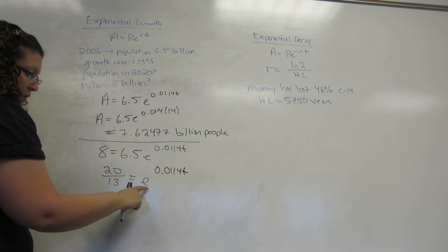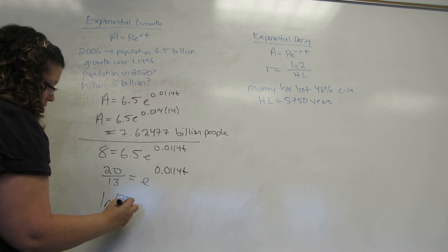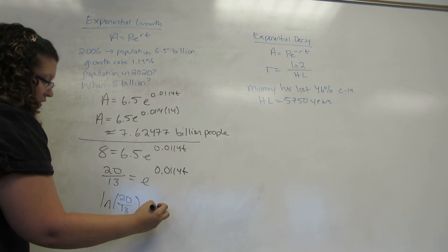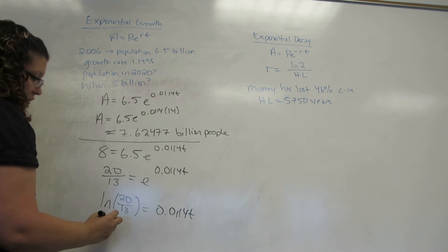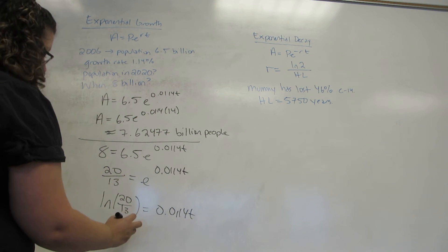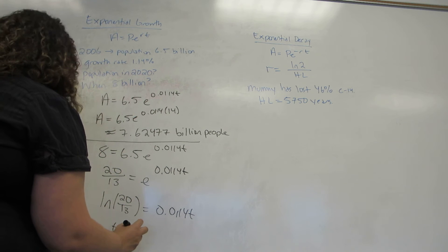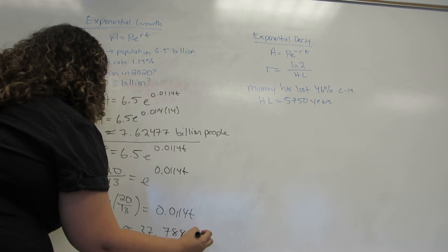And I actually turned that into a fraction just because I don't like decimal expansions. Then, I'm going to take a natural logarithm of both sides to cancel that E. And the natural log of E is just the 0.0114 T. And so, T is what happens when I take this log and divide it by the 0.0114, and I get approximately 37.788 years.